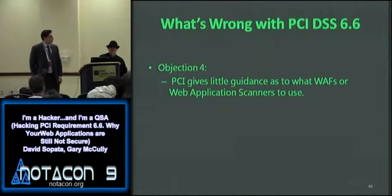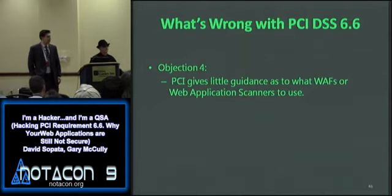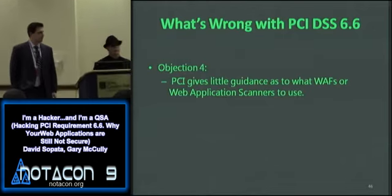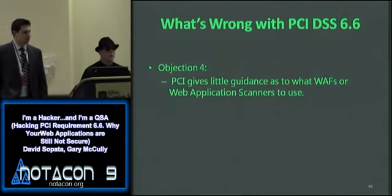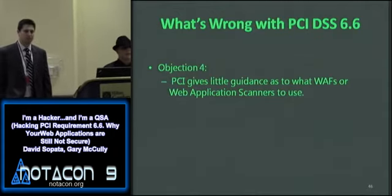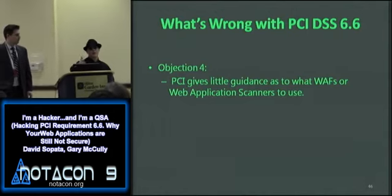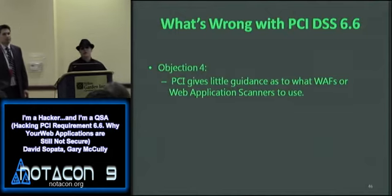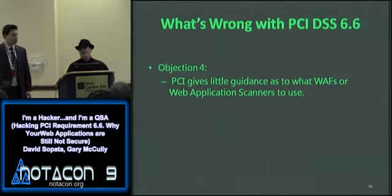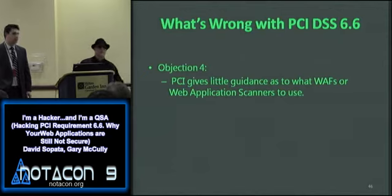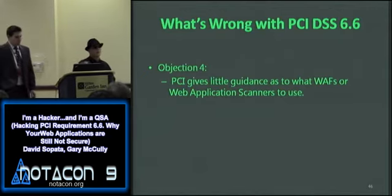We're also an ASV — Approved Scanning Vendor. For ASV certification, once a year the PCI Council sets up a test environment and you have to scan it. If you find a certain number of vulnerabilities and produce correct reporting, you're approved. However, there is nothing in place for web application firewalls or scanners to be certified as approved tools for PCI DSS 6.6. So any web application firewall is acceptable — a free one, a Barracuda, a ProFence. There's no certification process for these products at all.